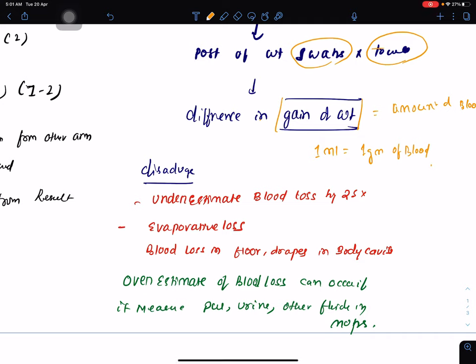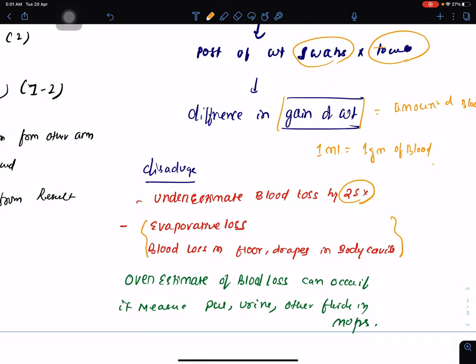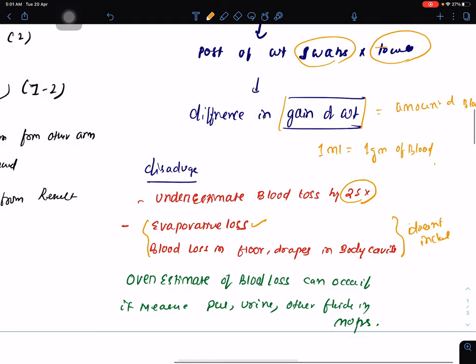What are the disadvantages? It underestimates the blood loss by 25%. It does not include evaporative loss and blood loss in floor, drapes, and body cavities. It can overestimate the blood loss if it measures pus, urine, and other fluids in the mops. If mops contain other fluids, it can overestimate the blood loss.